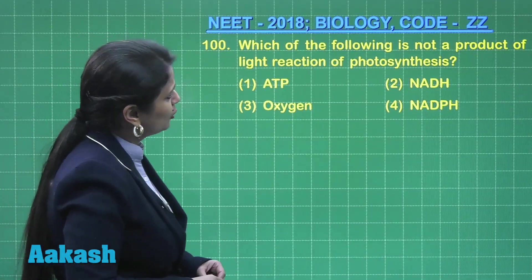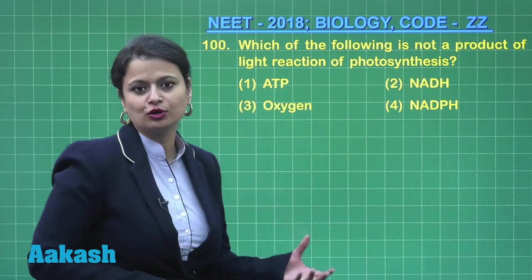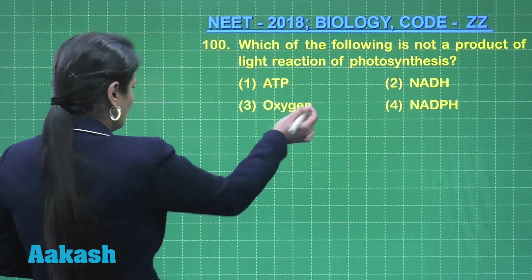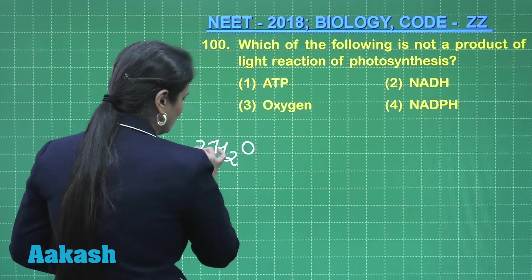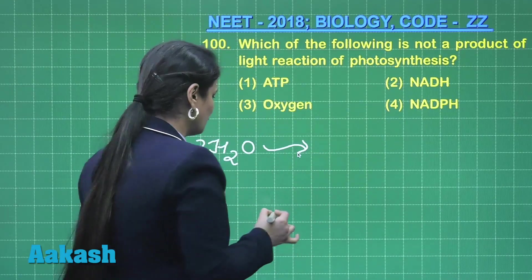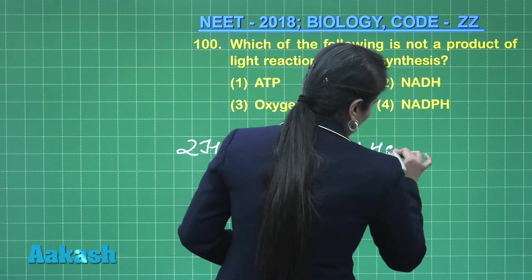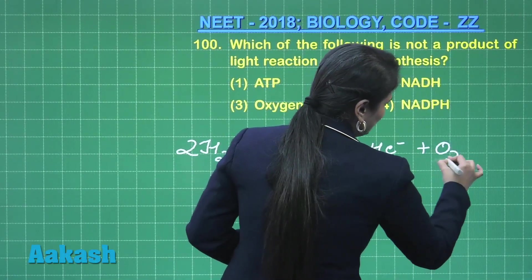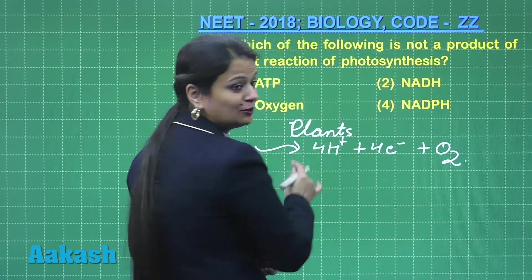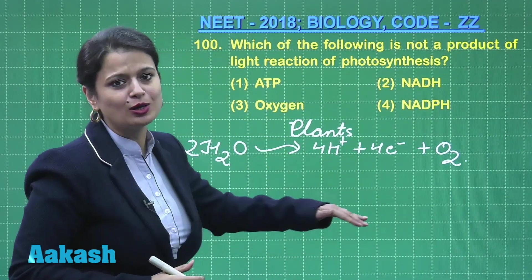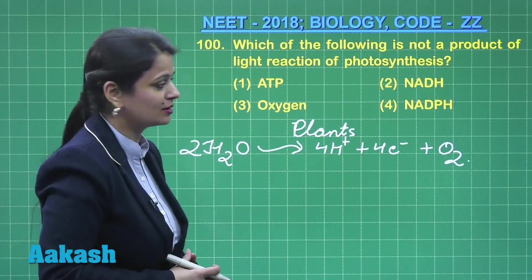Question number 100: which of the following is not a product of light reaction of photosynthesis? In the plants, in the presence of light, there is splitting of water — photolysis of water — which releases hydrogen ions, electrons, and oxygen. So during light reaction in plants there is release of oxygen, which is why it is known as oxygenic photosynthesis.